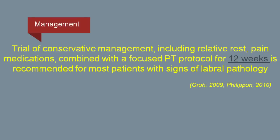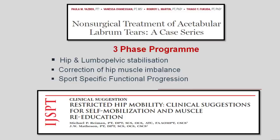Moving to conservative management: the expert opinion is that a minimum period of 12 weeks is recommended for a trial of conservative management. Small tears can be managed successfully with a rehabilitation program. If conservative management fails, a surgical referral might be appropriate. There are many articles on conservative management, including a good case study published in the JOSPT which looked into a non-surgical treatment program for acetabular labral tears using a three-phase approach. Improving hip mobility is also important, and an article by Michael Raymond looked into common methods to achieve this.